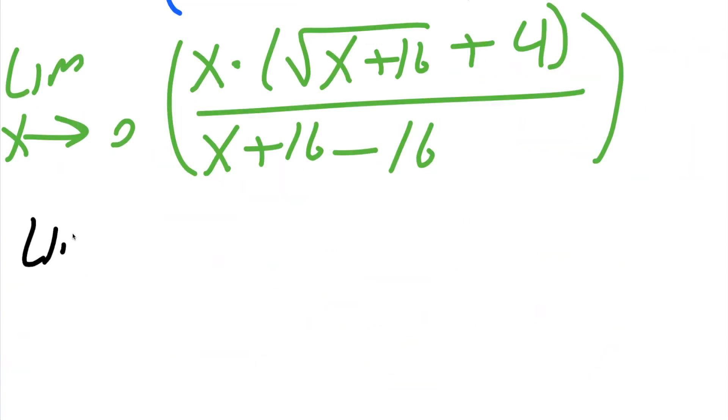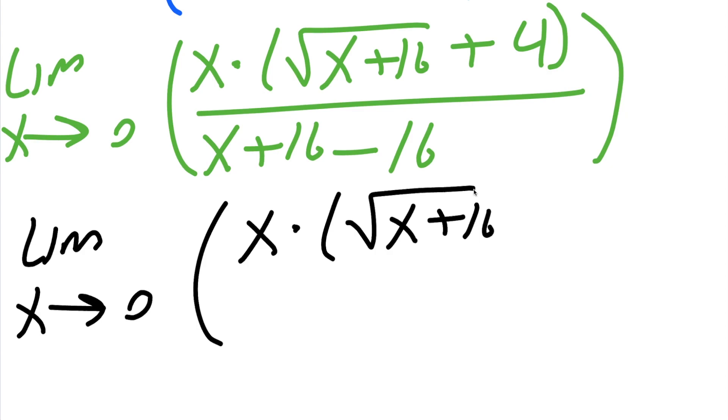Next step, we can clean this up a little bit. So we have the limit of x approaching 0, parentheses. In the numerator, we'll stay the same, so x times parentheses, square root of x plus 16, plus 4, closed parentheses, divided by.